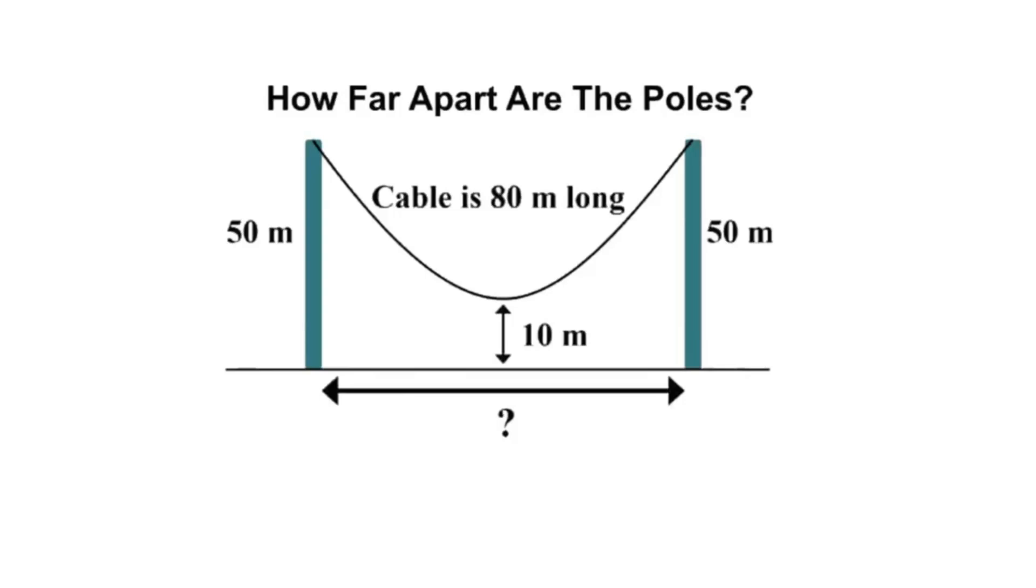Okay, so today's problem is a pretty popular one. How far apart are these two poles? We've got two poles that are 50 meters each, there's a cable between them that's 80 meters long, the bottom of the cable to the ground is 10 meters, and we have to find the distance. Pause the video so you can solve the problem on your own and I'll reveal my solution.